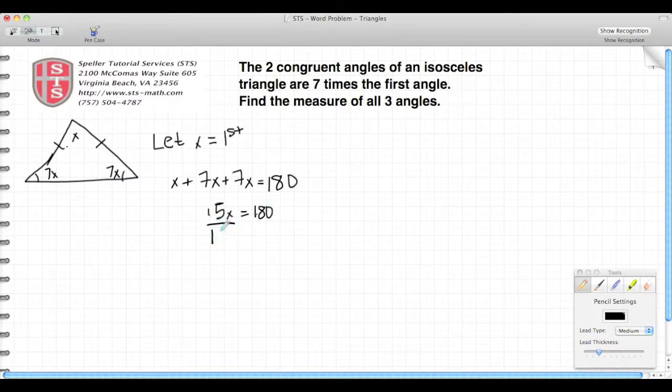To solve for x, I need to divide both sides of my equation by 15. That means those 15s cancel to 1, and I'm left with 180 divided by 15. I can simplify this fraction. Both numerator and denominator can be divided by 5. So let's work over here.